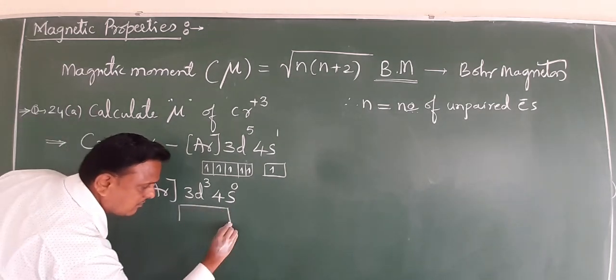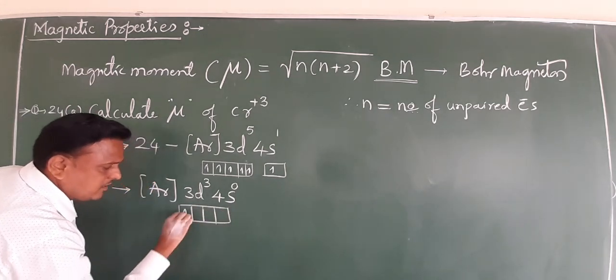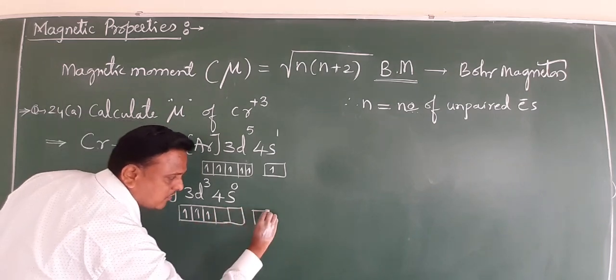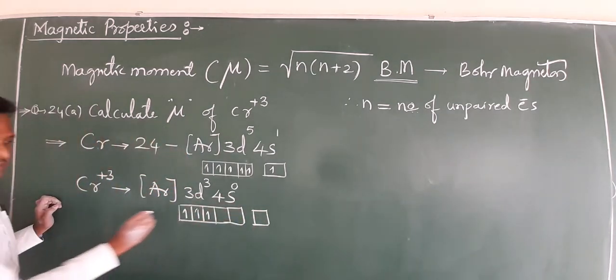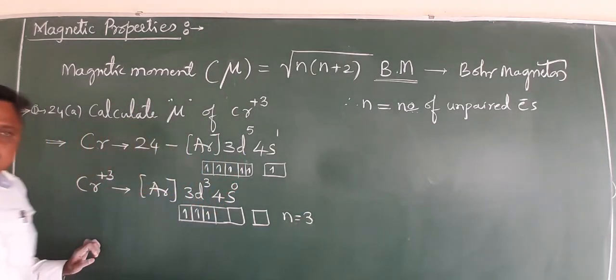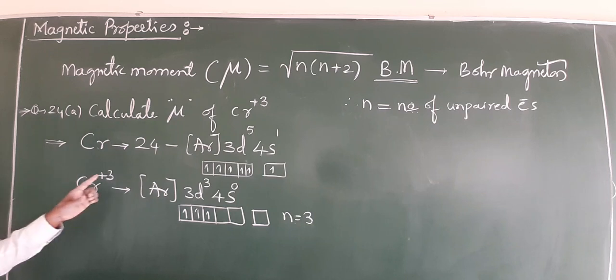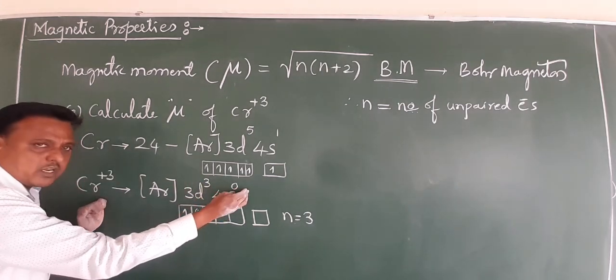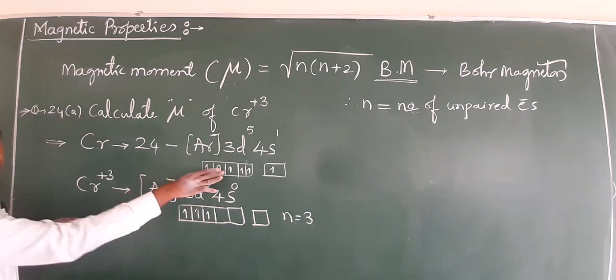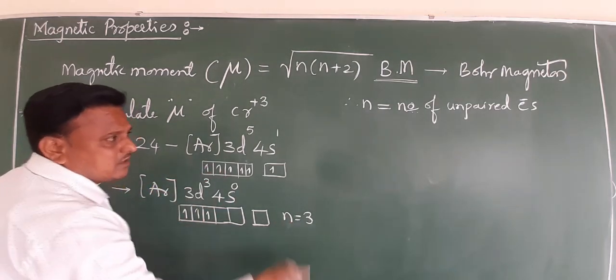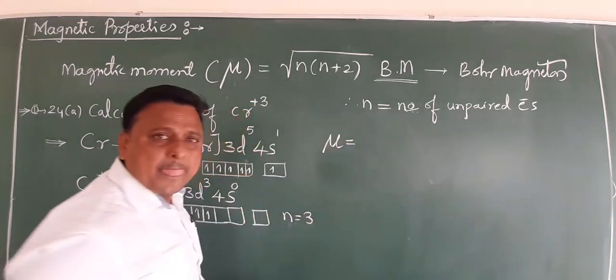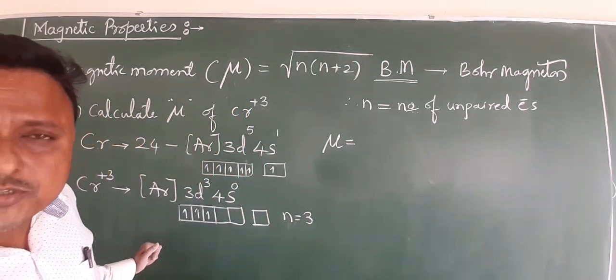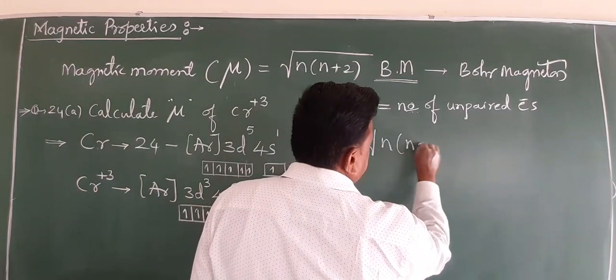What about chromium plus three? Plus three means loss of three electrons. Where does chromium lose electrons? We remove 4s¹ first, then two from 3d. So Cr³⁺ has 3d³ configuration with three unpaired electrons. Therefore, n = 3.